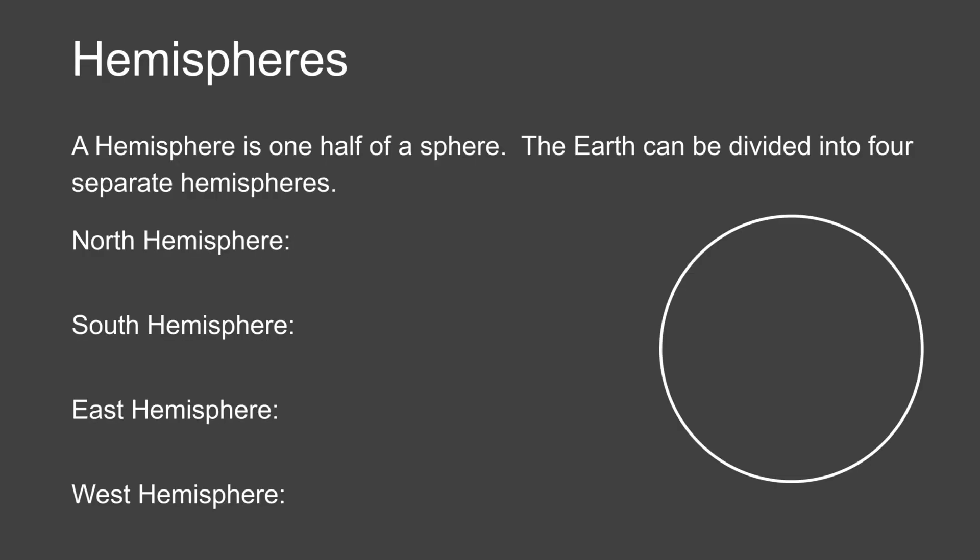The first thing we need to look at when doing lines of latitude and longitude are the very center lines that exactly separate the Earth in half. We call those hemispheres. A hemisphere is one half of a sphere. And even though it's halves, the Earth can be divided into four separate hemispheres.